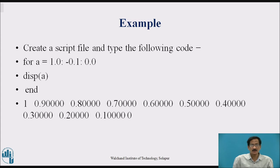Example: create a script file. For A, it takes the value from 1 to 0 with a difference of minus 0.1. Display A, end. It means it will type numbers from 1 decreasing by a step of minus 0.1. So the answer is 1, 0.9, 0.8, 0.7, 0.6, 0.5, 0.4, 0.3, 0.2, 0.1, and finally 0.